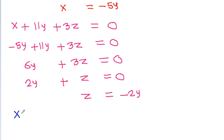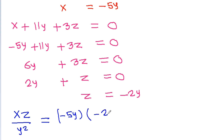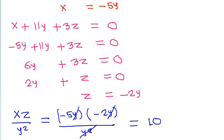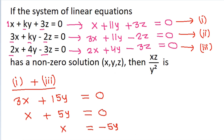And hence, xz by y squared equals (x times z) divided by y squared. Substituting x equals minus 5y and z equals minus 2y: we get (minus 5y times minus 2y) divided by y squared. The y squared terms cancel, and minus 5 times minus 2 equals 10. So xz by y squared is equal to 10.